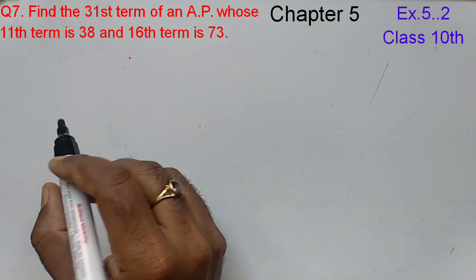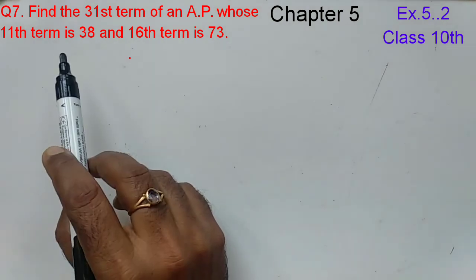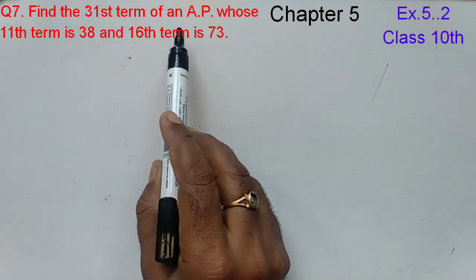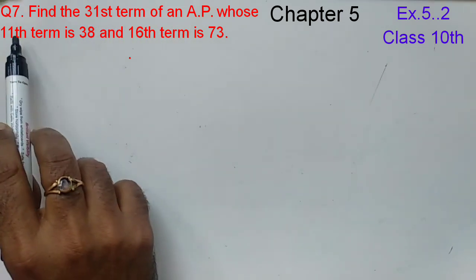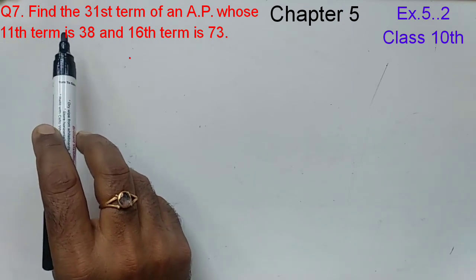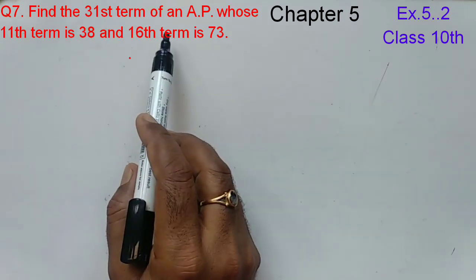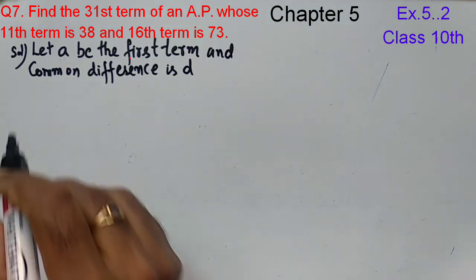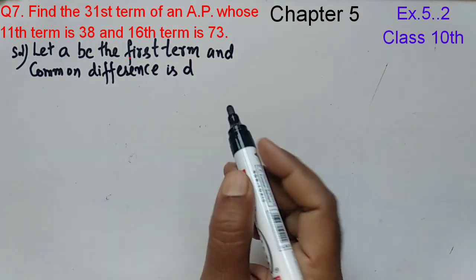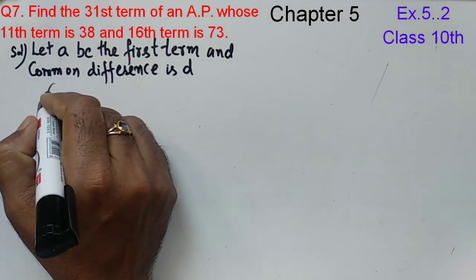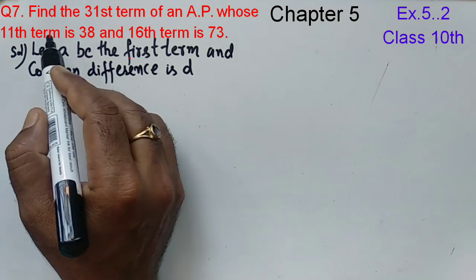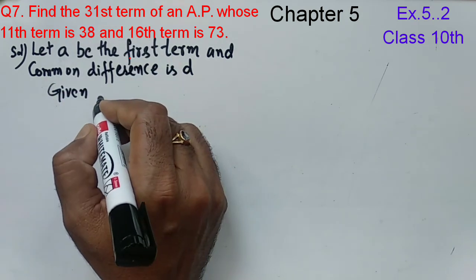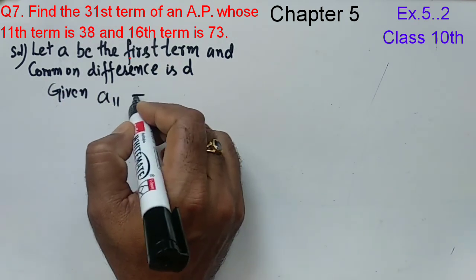Solve question number 7. Question number 7 is: find the 31st term of an AP whose 11th term is 38 and 16th term is 73. Let A be the first term and common difference is D. Given: A11 is equal to 38.